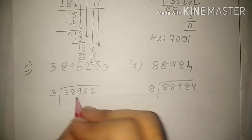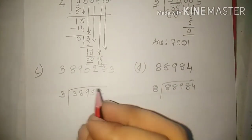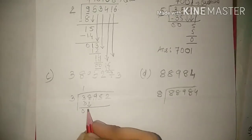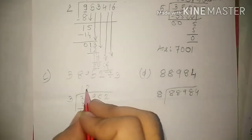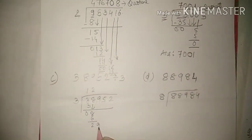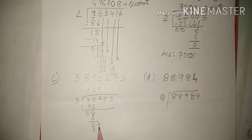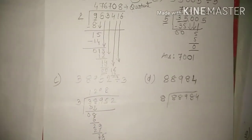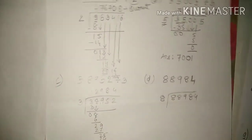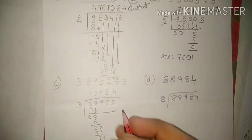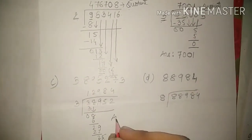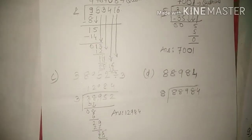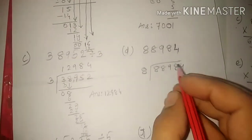Moving to the next sum: 38952 divided by three. Three ones are three, remainder zero. Eight comes down — three twos are six, remainder two. Nine comes down — three nines are twenty-seven, remainder two. Five comes down — three eights are twenty-four, remainder one. Two comes down — three fours are twelve, remainder zero. So your answer is 12984.